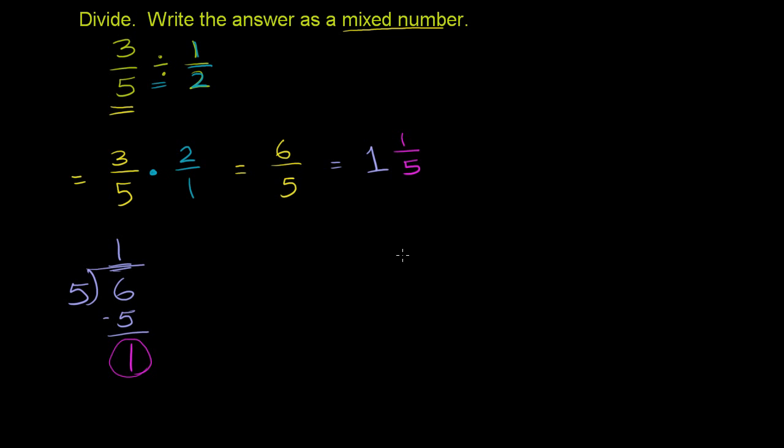If I were to take 4 objects. So I have 4 objects. 1, 2, 3, 4. And if I were to divide it into groups of 2. So I want to divide it into groups of 2. So that is 1 group of 2. And then that is another group of 2. How many groups do I have? Well, 4 divided by 2, I have 2 groups of 2. So that is equal to 2.